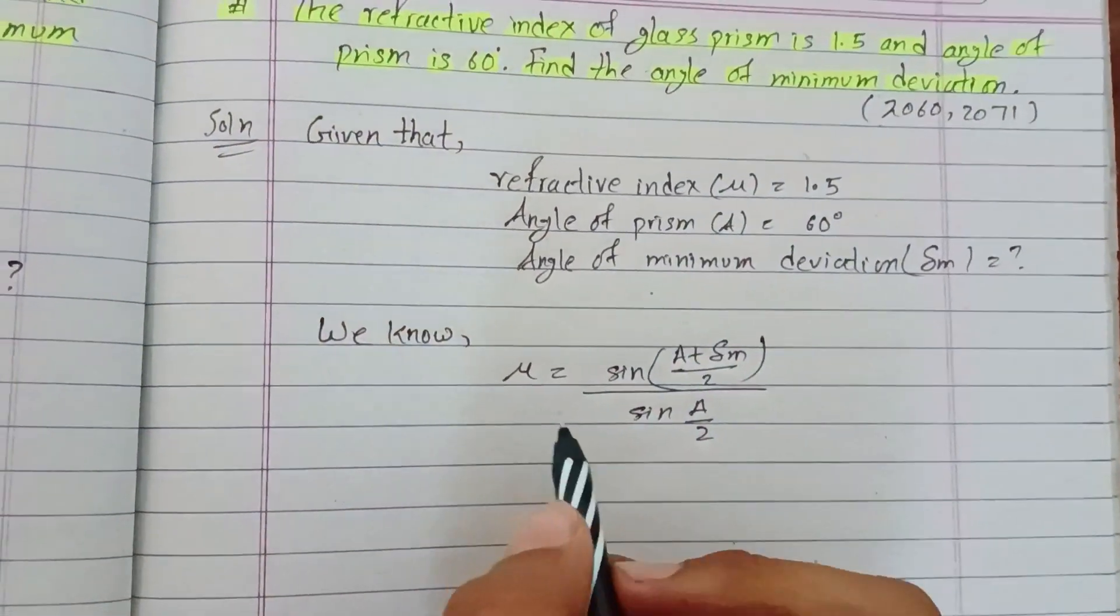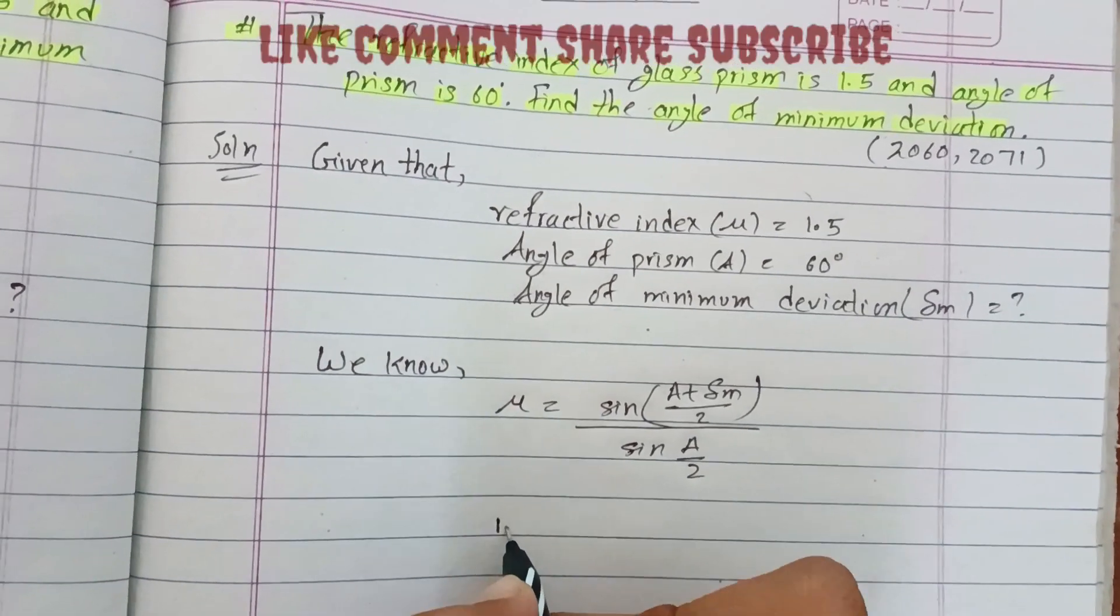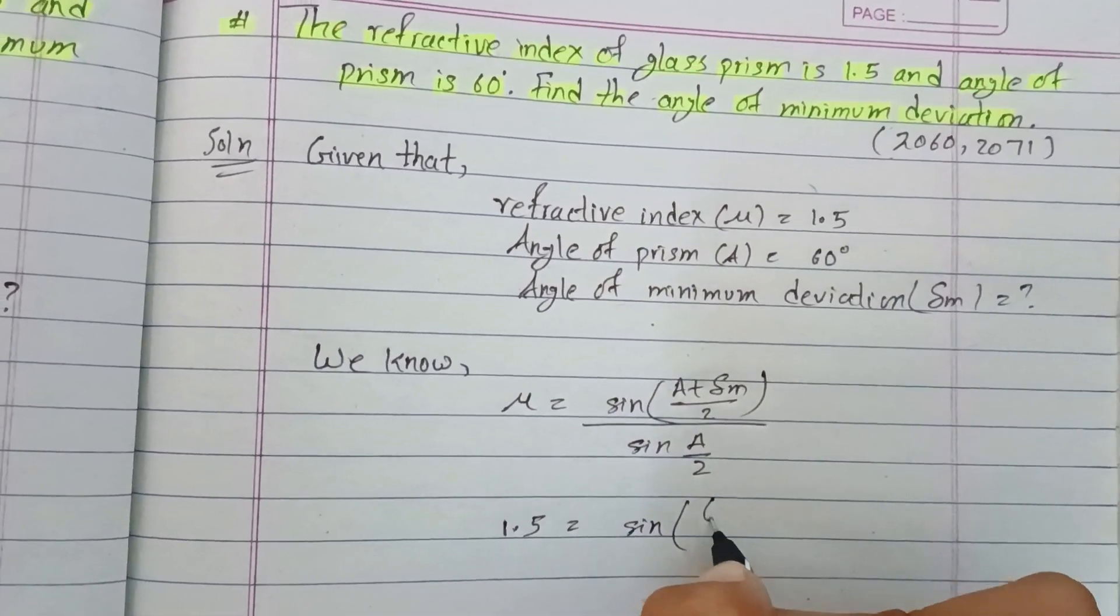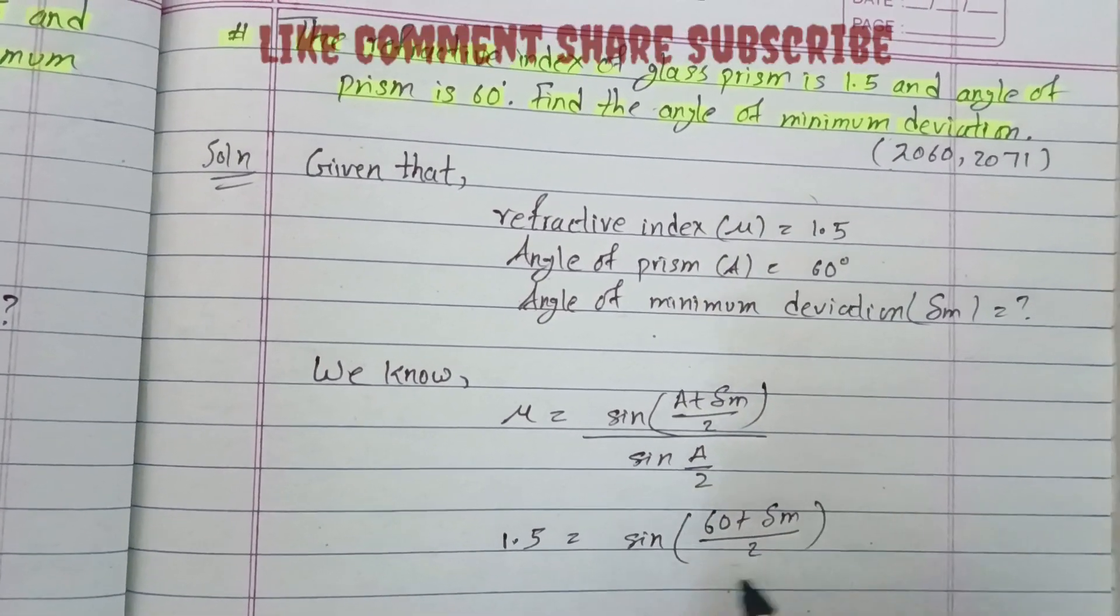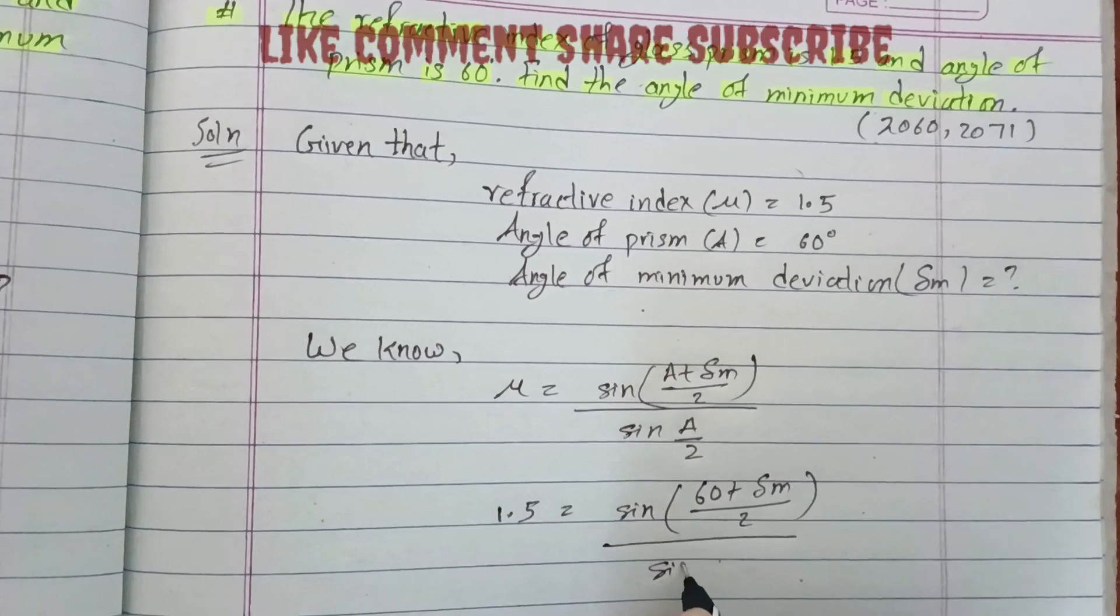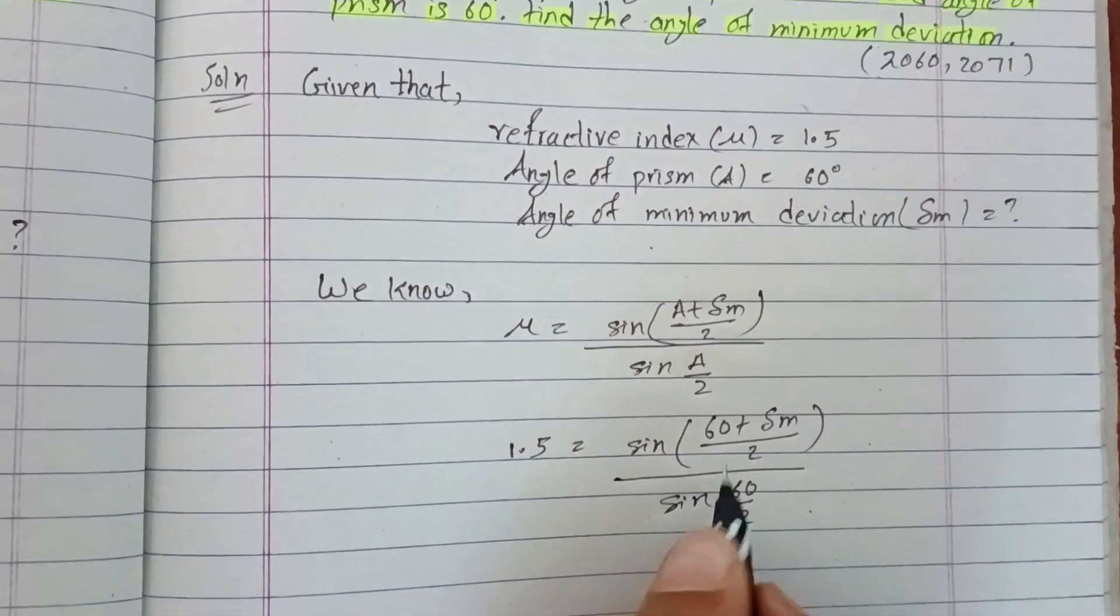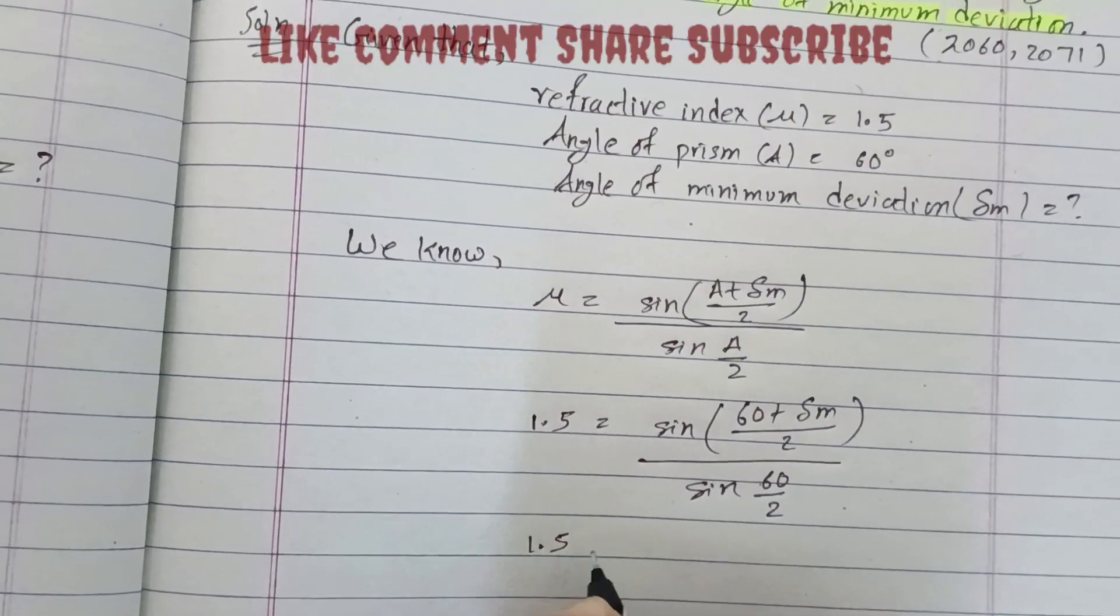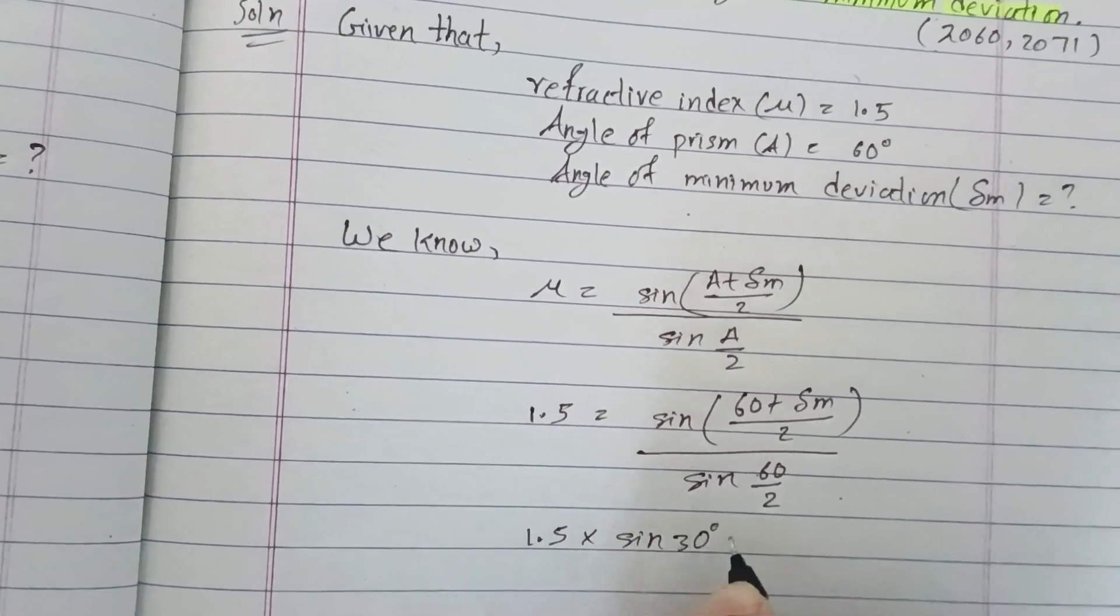Substituting the values: 1.5 = sin((60 + δm)/2) / sin(60/2). So 1.5 × sin 30...